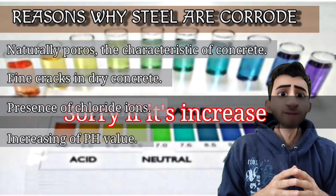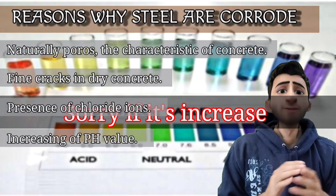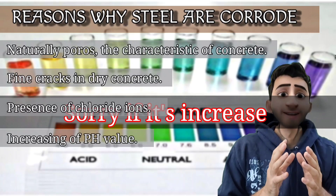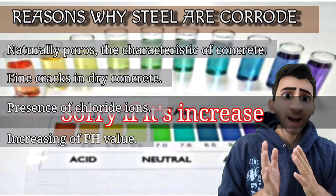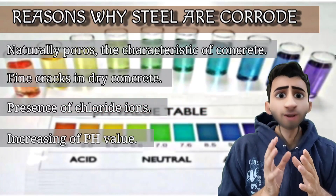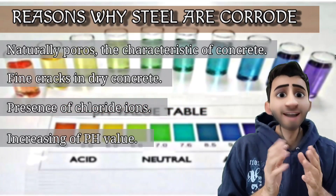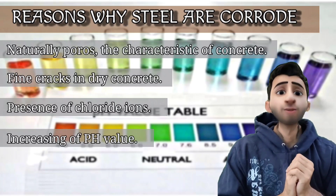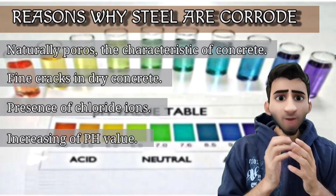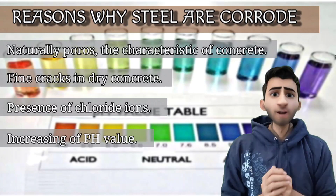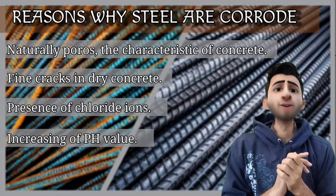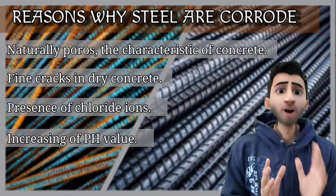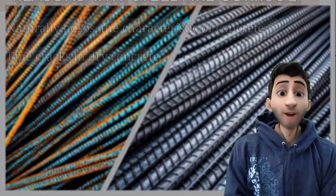Corrosion in reinforced concrete can also occur if the pH of the concrete has decreased. pH is a measure of how acidic or basic water is — the range goes from 0 to 14. When the pH range changes, it can also cause corrosion of the steel.